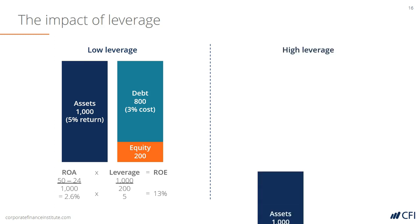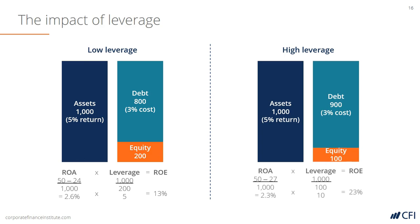Let's compare that to a higher degree of leverage where the equity is only half the amount. In this case, the return on assets starts with the same interest income as the low-leverage example, which is 50, but that's offset by a higher interest expense. Because the higher-leverage company is using more debt, it has to pay more interest — 27 is deducted as opposed to 24 in the low-leverage case.